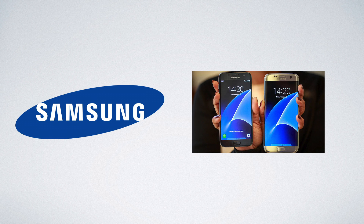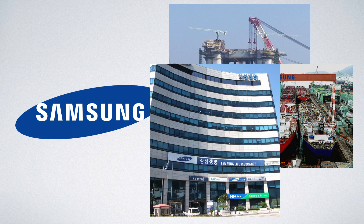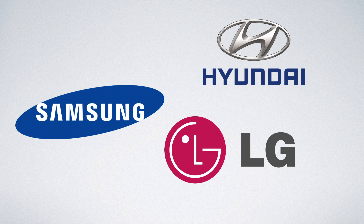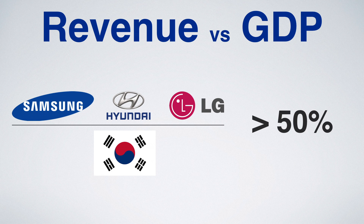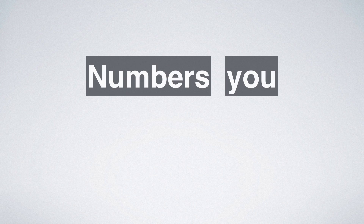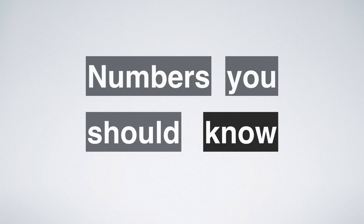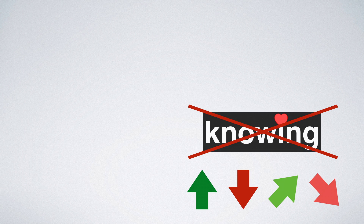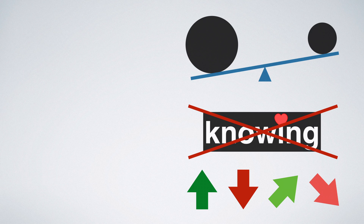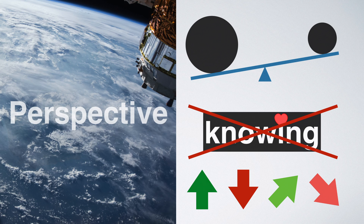When you think Samsung, you think smartphones — you're not thinking heavy industry, ships, banking, and insurance conglomerate. Together with its peers LG and Hyundai, the South Korean economy is pretty much run by three companies. The title of this video is misleading — it's called 'Numbers You Should Know,' but knowing any of these numbers by heart is useless. They keep changing all the time. But once you know their magnitude, you will get a lot more perspective.